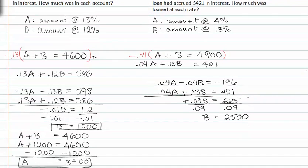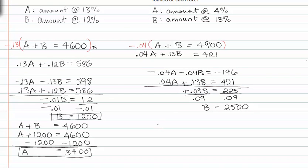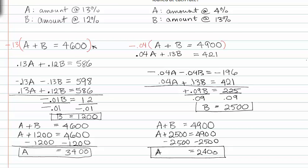If we know how much B equals, we can easily find A. A plus B equals 4,900 dollars. So if B equals 2,500 dollars, and we subtract 2,500 from both sides, we get A equals 2,400 dollars. And those are my values for A and B.